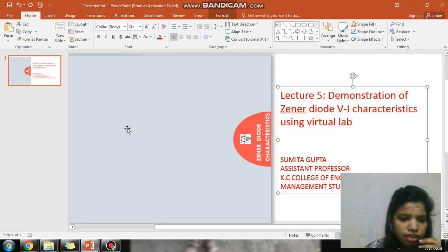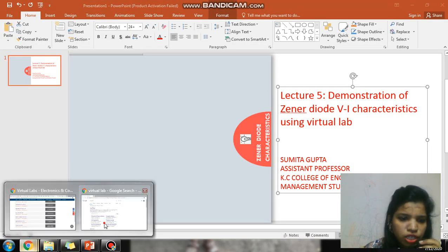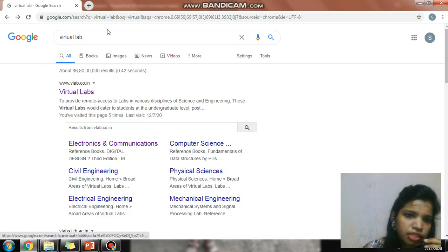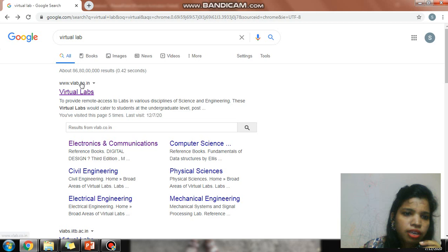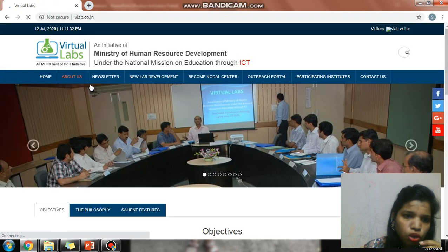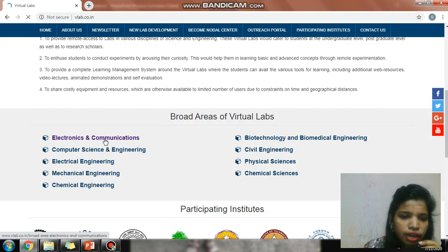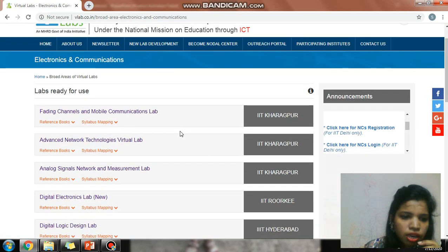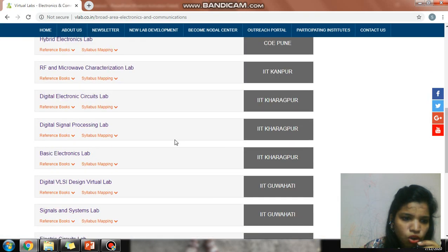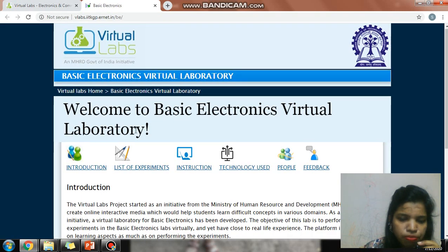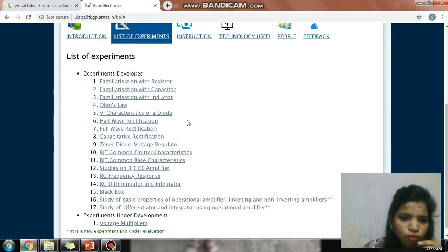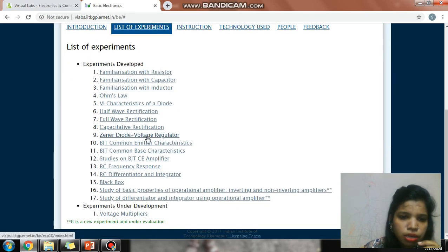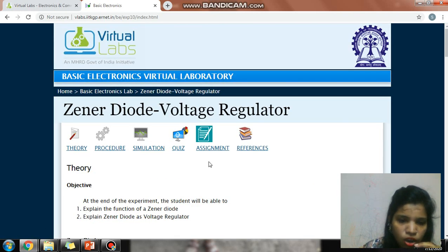In the last lecture I explained the concept of general diode. For this demonstration, first type virtual lab in Google, then click on lab.co.in. Come down, click on Electronics and Communication, scroll down to Basic Electronics Lab, then click on list of experiments, scroll down to experiment number nine, General Diode Voltage Regulator, and click on it.